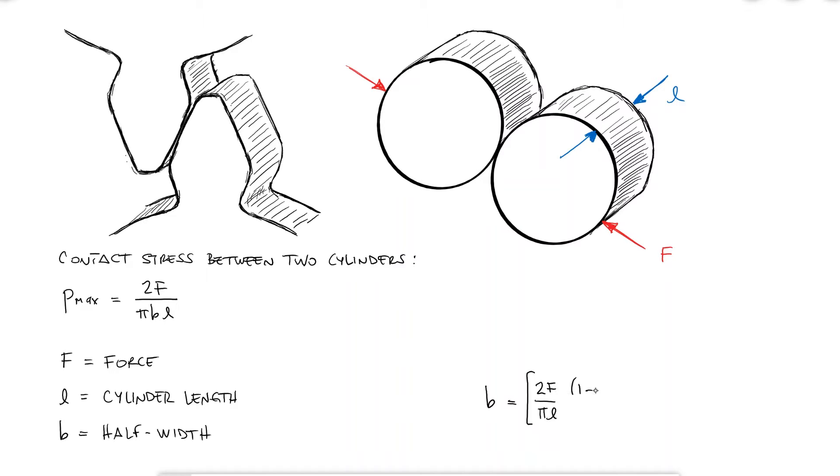B can be obtained in terms of the elastic moduli, Poisson's ratios, and cylinder diameters.